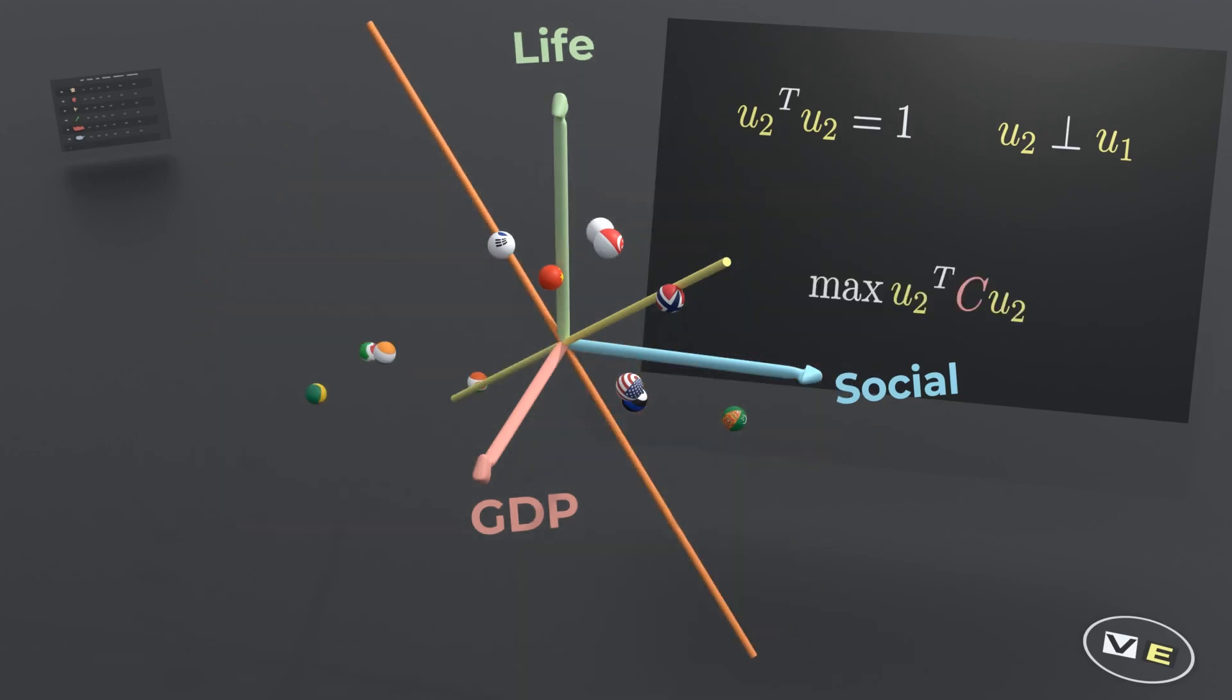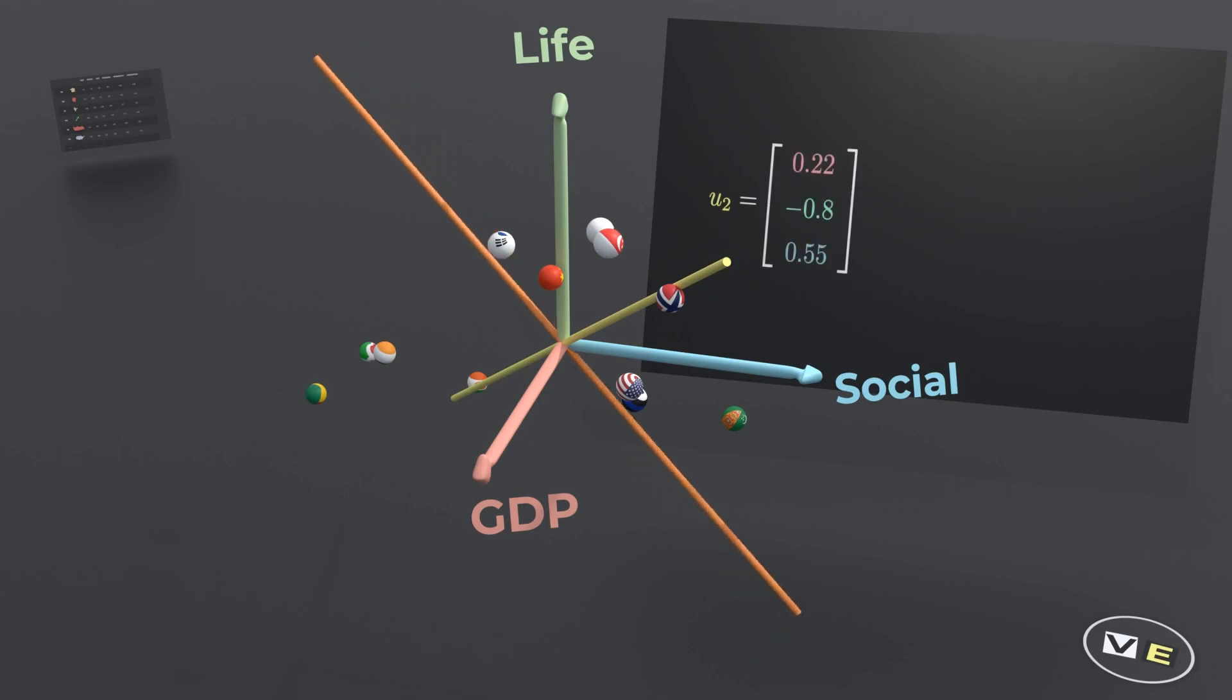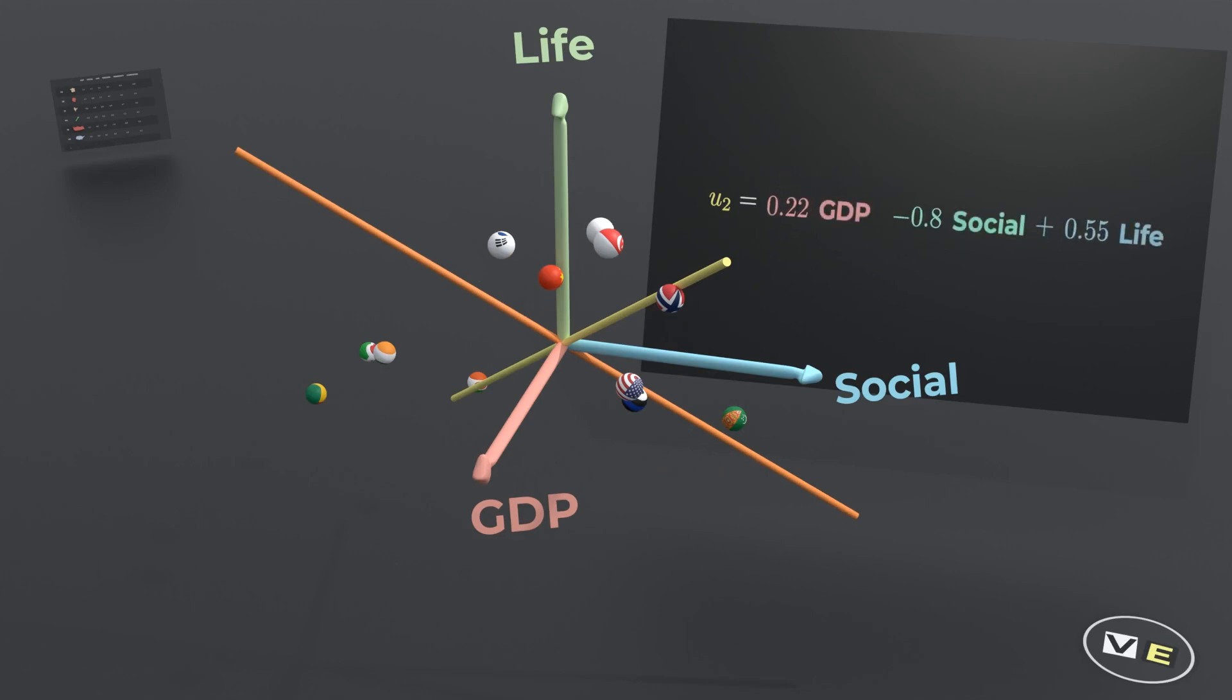And following reasoning similar to what we did before, we find that the second component is given by the second eigenvector of the covariance matrix of the data, and looks like this. In English, this component is the difference between individual factors and social factors. So let's call this component balance.